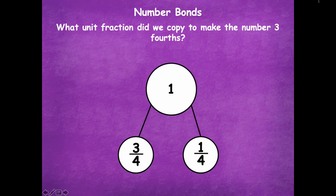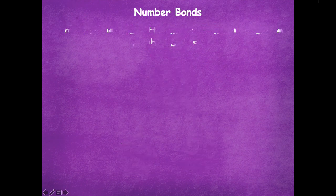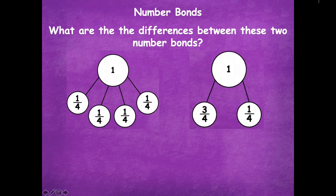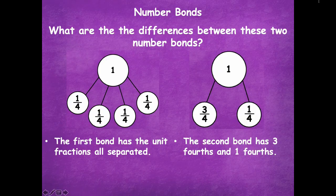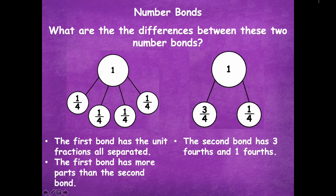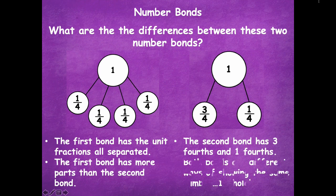What unit fraction did we copy to make the number three-fourths? One-fourth. What are the differences between these two number bonds? The first bond has the unit fractions all separated — four of them. The second bond has three-fourths and one-fourth, so two parts. The first bond has more parts than the second bond, meaning the second bond has fewer parts. Both bonds are different ways of showing the same number: one whole.